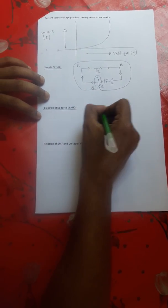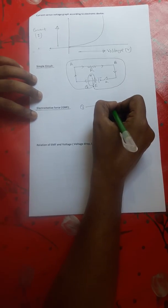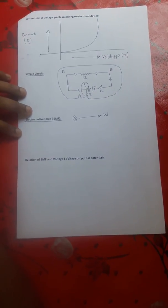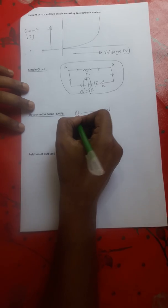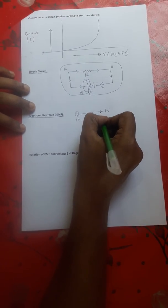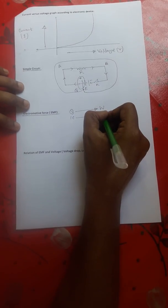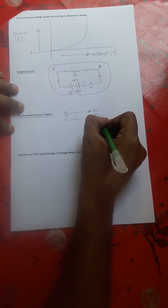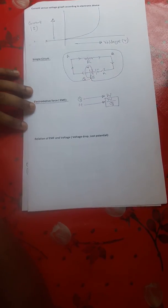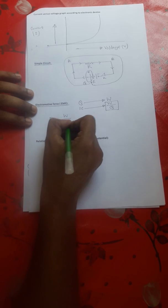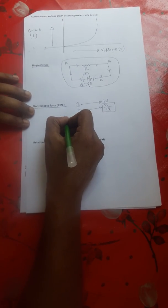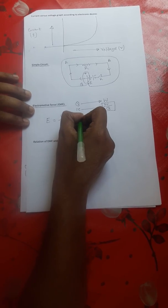To shift this positive charge Q from the positive terminal, through the entire circuit, and return it back to its previous position, the total amount of work done is W. To shift 1 coulomb of charge through the entire circuit and return it back, the amount of work done will be equal to W divided by Q. This W divided by Q term is known as electromotive force.